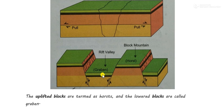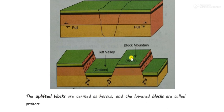When a block is thrown down between two parallel faults, a rift valley or a graben is formed. In simple language, the uplifted blocks are termed as horst and the lowered blocks are called graben. Block mountains are all about blocks — the part which has sunk in the ground is known as a rift valley or graben, and the part which has been uplifted is called a block mountain or horst.